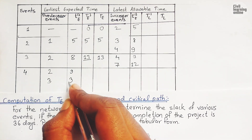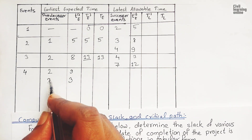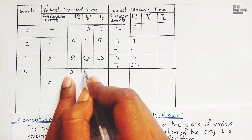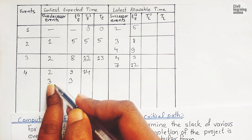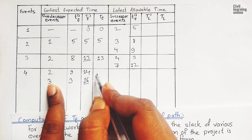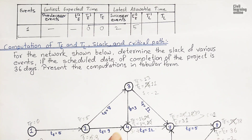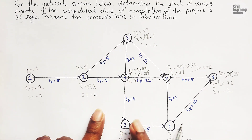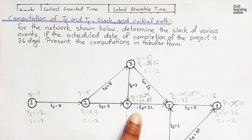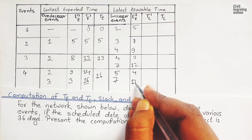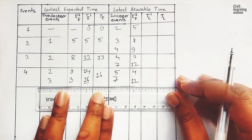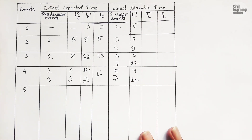For event four: it has two predecessors, events two and three. TE of event two is five, plus nine equals fourteen. TE of event three is thirteen, plus three equals sixteen. Maximum of these two is sixteen, so TE of event four is sixteen. Event four has two successors, events five and seven, with durations four and two respectively.